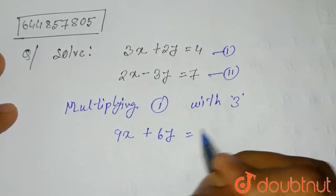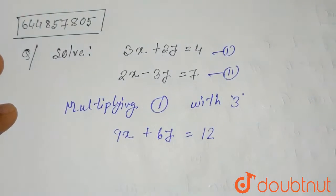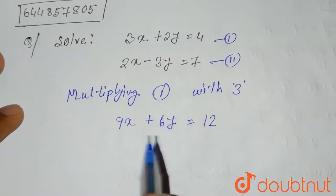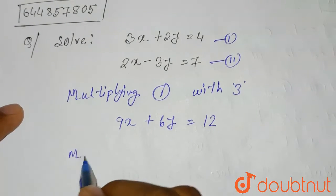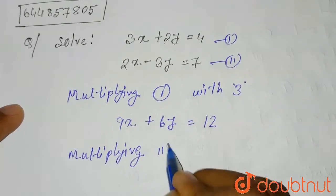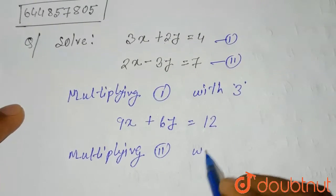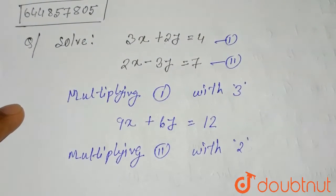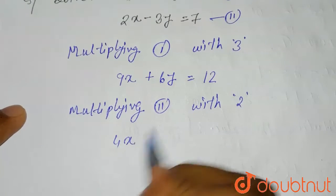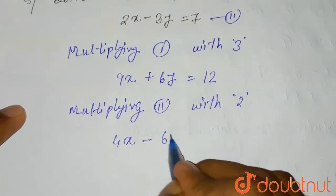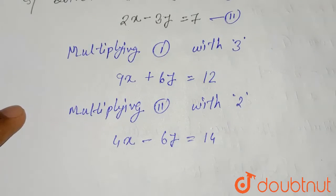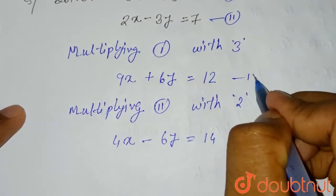Now, multiplying the second equation by 2, what we will get is: 4x minus 6y equals 14. Let's call these equation 3 and equation 4.